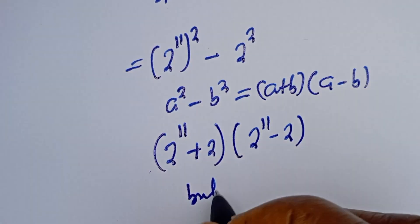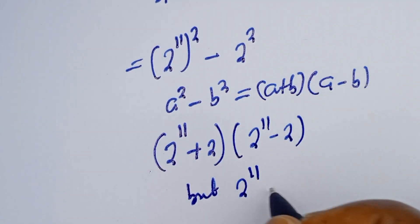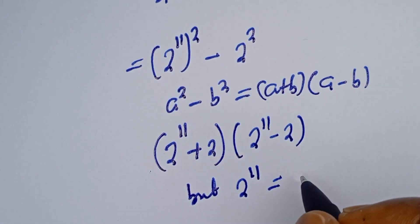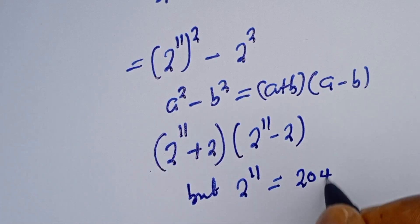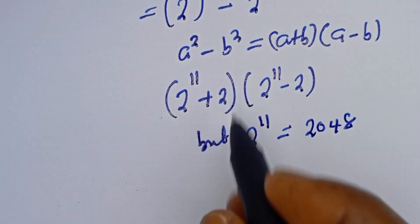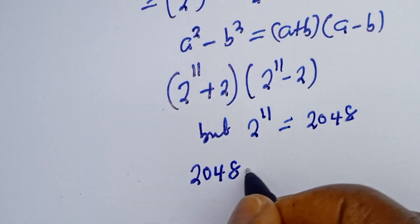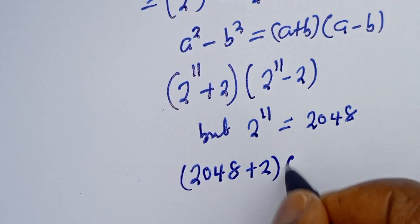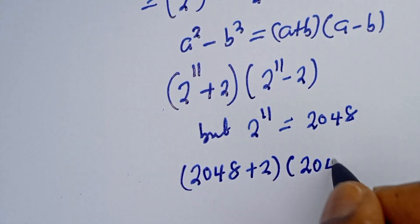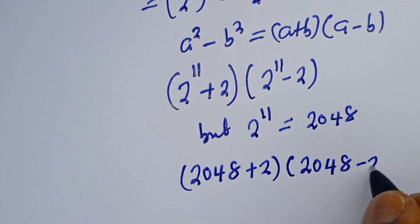But 2 raised to power 11 is equal to 2048. Then this can be written as 2048 plus 2 bracket 2048 minus 2.